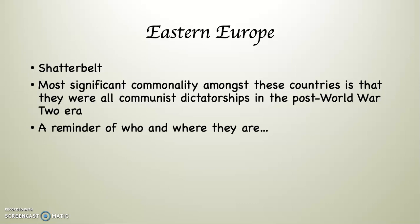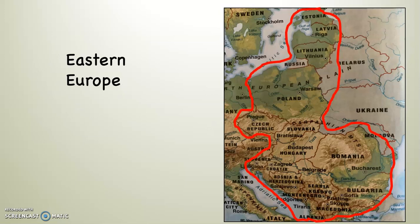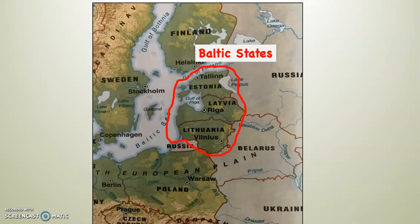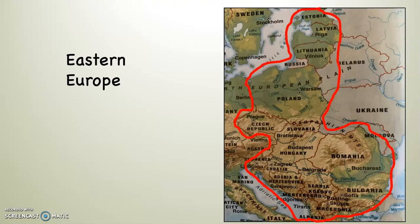Let me give you a little reminder of who and where they are. This, of course, is Eastern Europe. It starts up in the north at the three Baltic states — Estonia, Latvia, and Lithuania — and then continues down through Poland, the Czech Republic, Slovakia, Hungary, Romania, Bulgaria, Albania, and then the six countries that came out of the former Yugoslavia.